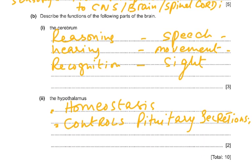Part B: describe the functions of parts of the brain. The cerebral hemispheres control reasoning abilities, speech, movement, hearing, recognition, and sight. The hypothalamus controls homeostasis and osmoregulation, and it controls secretions by the pituitary gland, which sits just below it. One mark for homeostasis and one mark for controlling pituitary secretions.